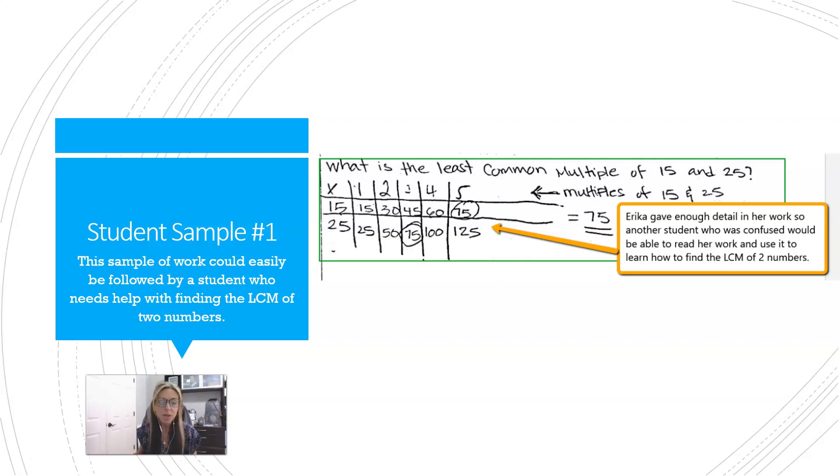Another student could easily look at this and figure out how to find the LCM of those two numbers. Imagine as if you're gonna take a picture of your work and text your friend. Is there enough information there that they'd be able to understand your thought process?